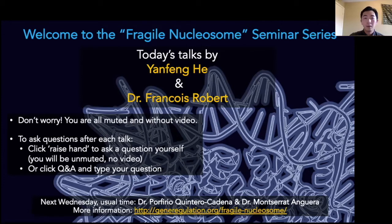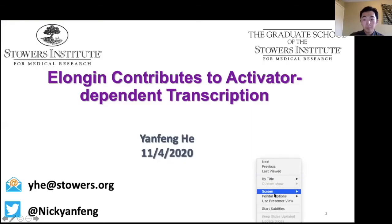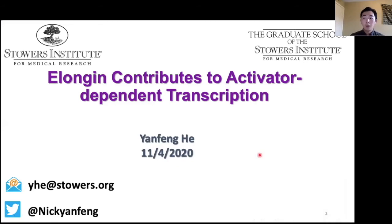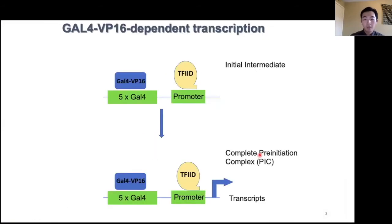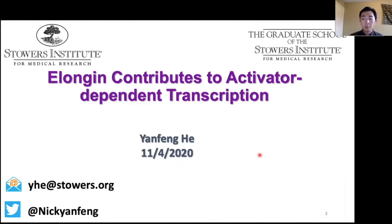Hello everyone. Thank you for having me here. My name is Yan Feng, and today I'm going to share a story about how we discovered that elongin, one of the RNA polymerase II elongation factors, contributes to activator-dependent transcriptional activation by using biochemical approaches.